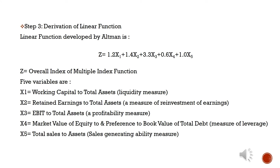As shown here, the Z-Score formula is: Z = 1.2×X1 + 1.4×X2 + 3.3×X3 + 0.6×X4 + 1.0×X5.